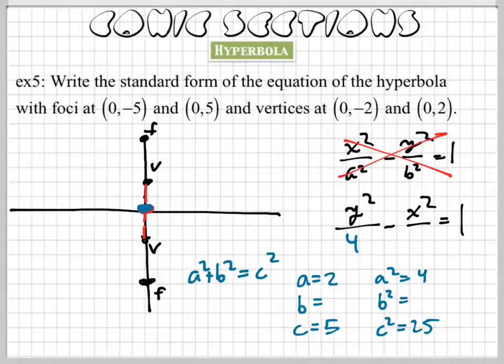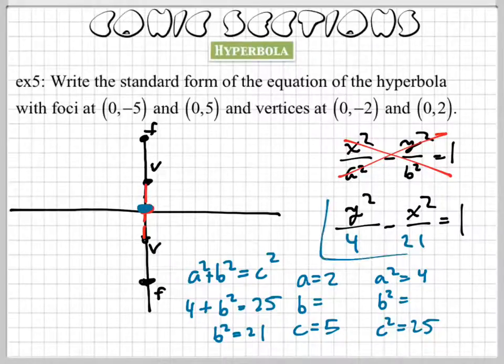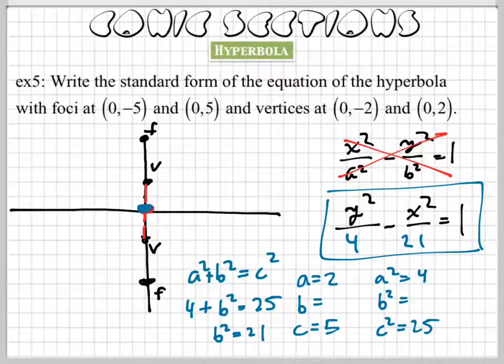The a² is 2. No, 4. The b² we don't know. The c² is 25. I subtract 4 from both sides. b² is 21. Boom, we got our b².